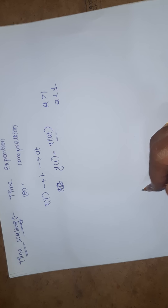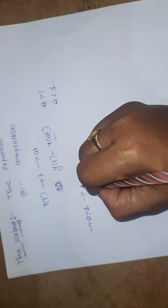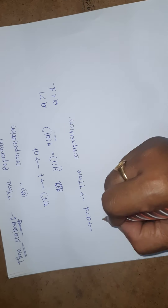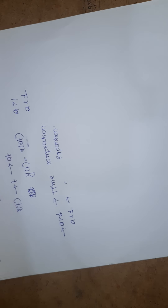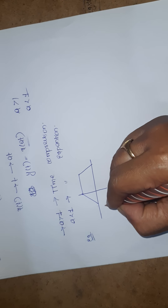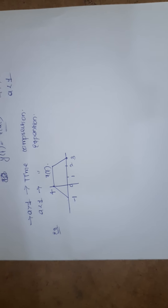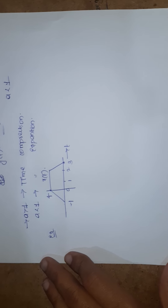So what will happen if a is greater than 1 and what will happen if a is less than 1, we will see. If a is greater than 1, it results in time compression. If a is less than 1, it results in time expansion. I will do this with an example. Consider one signal x(t) having limits from minus 1, 0, 1, 2, 3 with a magnitude of 4. For this signal x(t), we have to draw time expansion and time compression, that is x(a·t), by considering a value as less than 1 and a value as greater than 1.